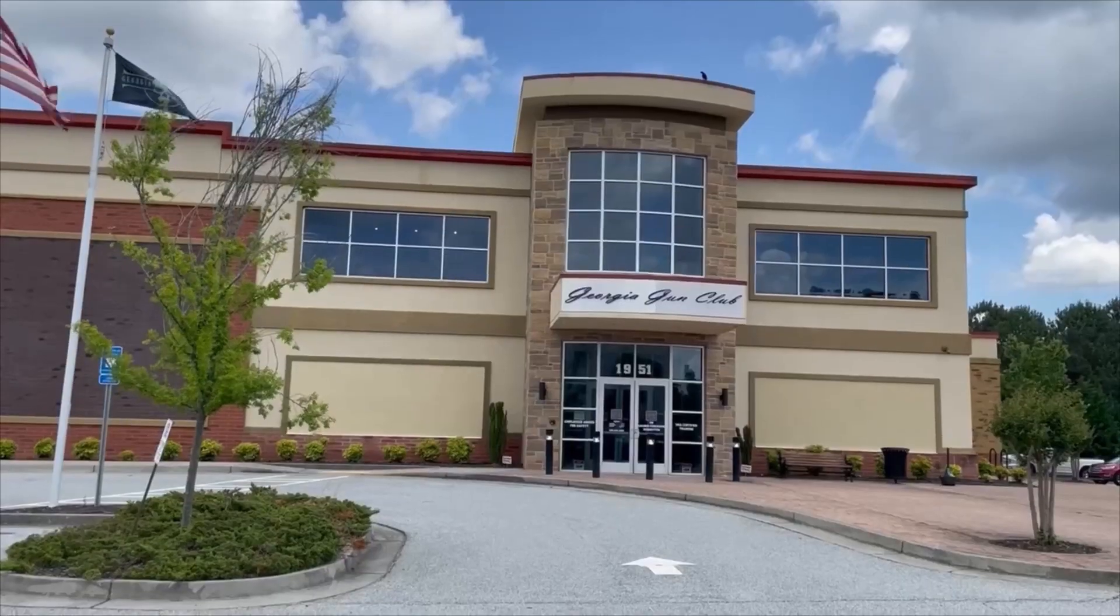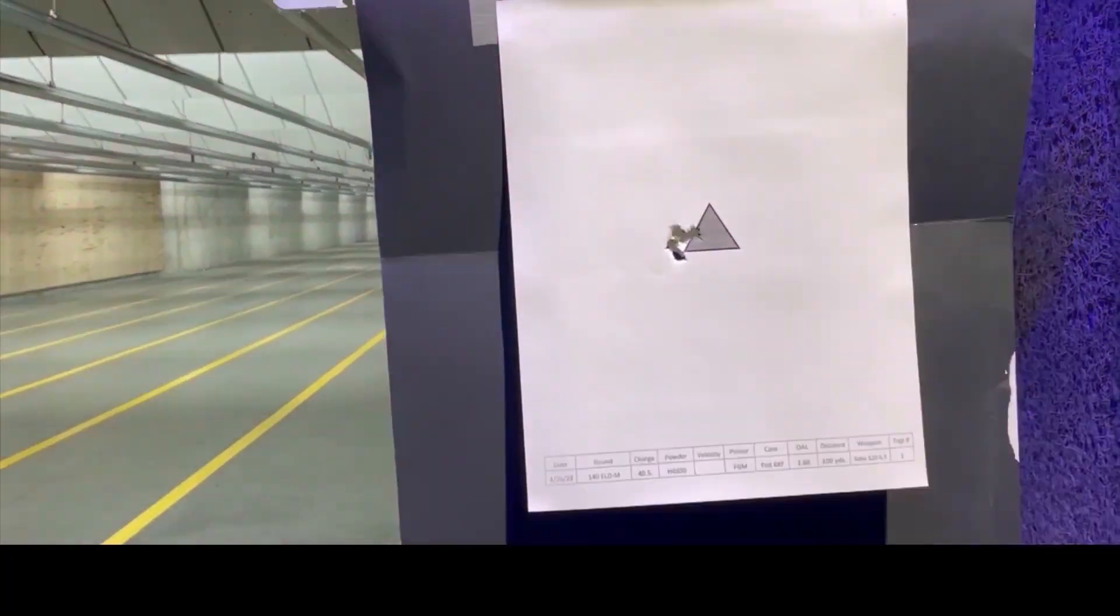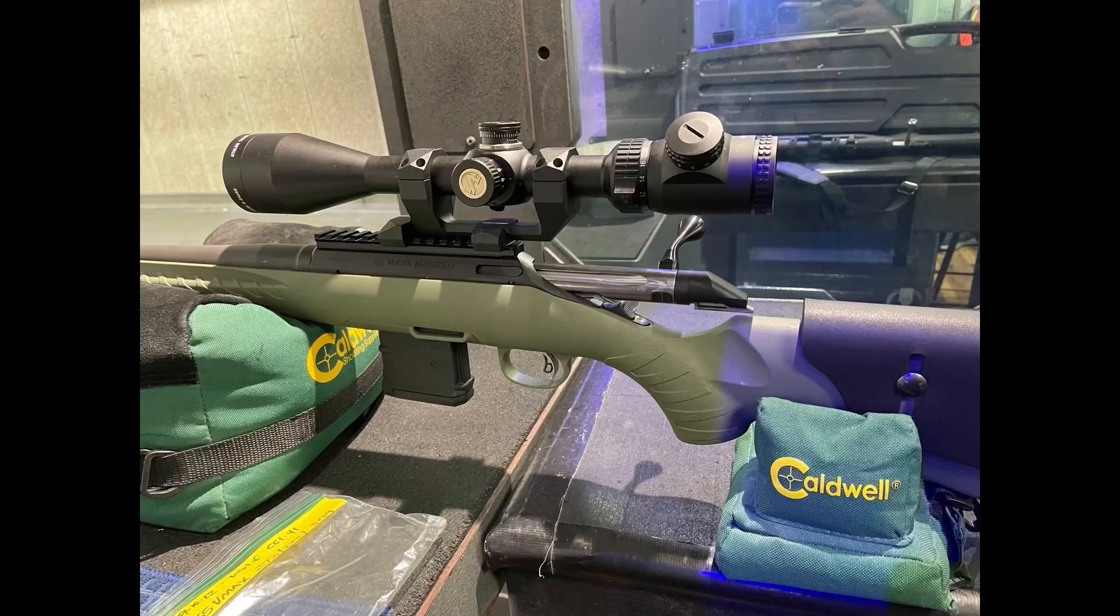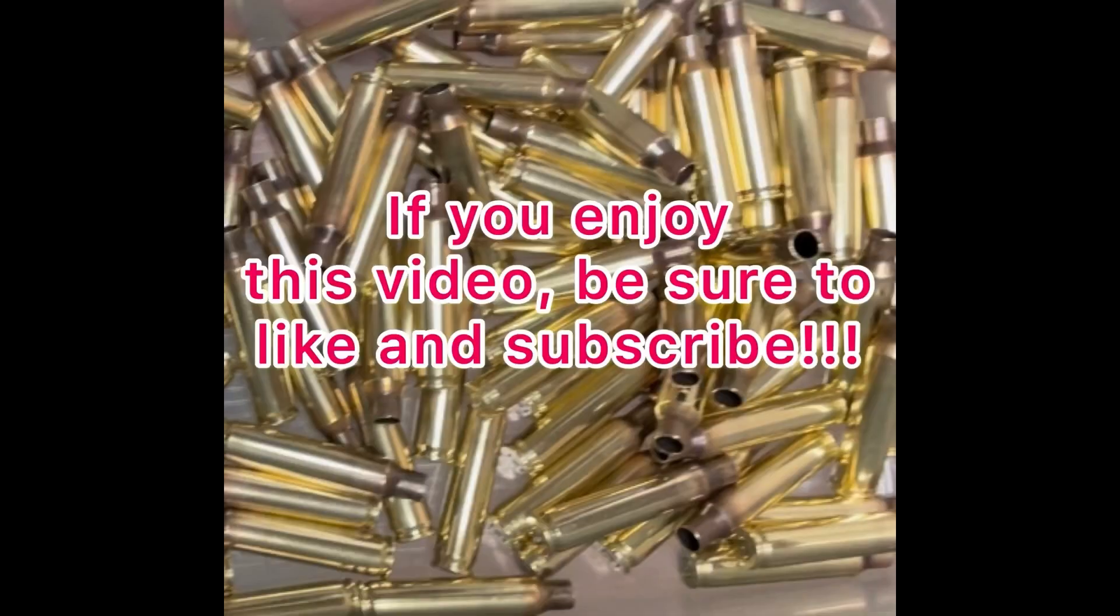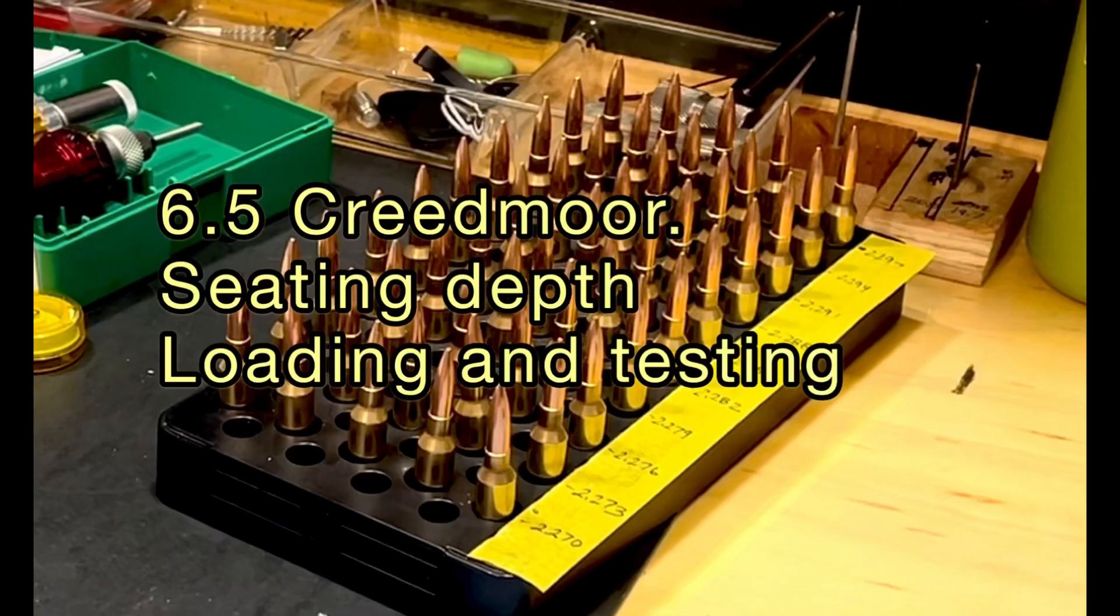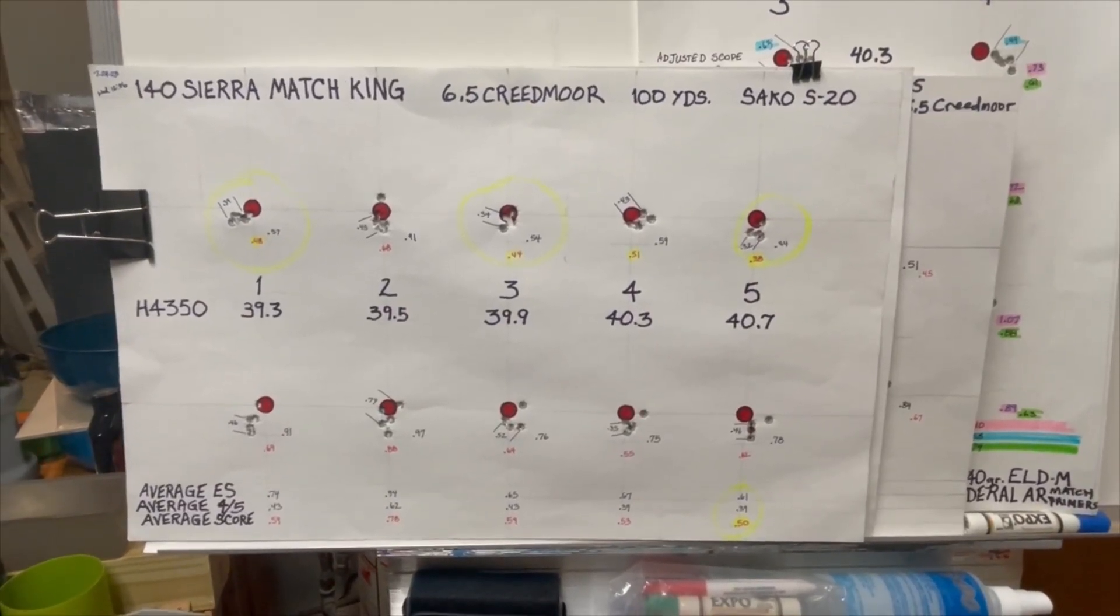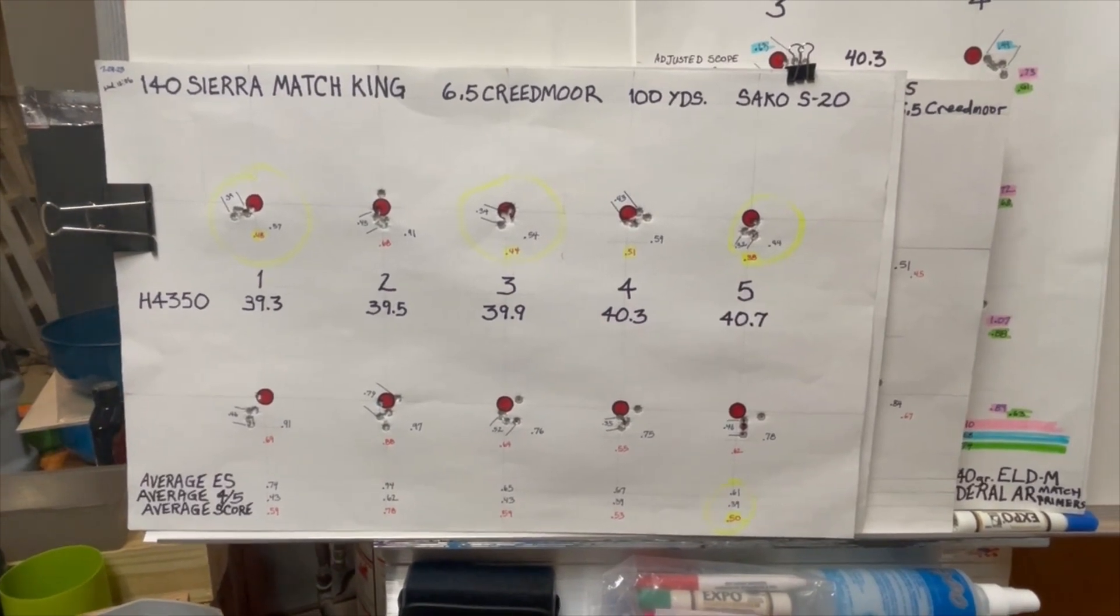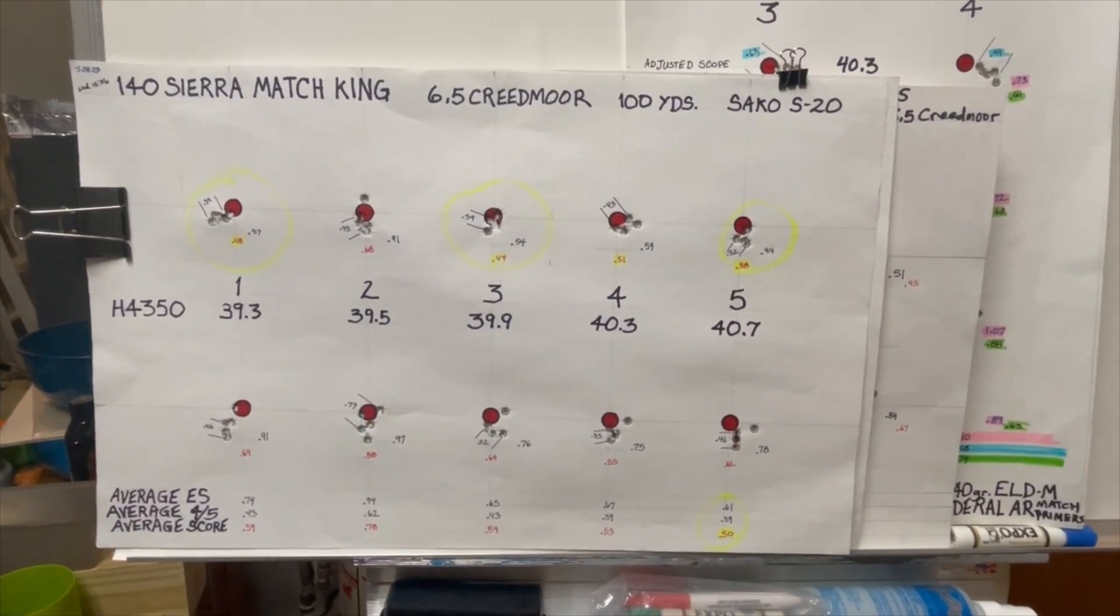Hi, I'm Dennis Phillips, and welcome to Everyday Reloading and Shooting. Using 140 grain Sierra Match King Bullets in our 6.5 Creedmoor, using H4350 powder, we ran loads from 39.3 grains to 40.7.